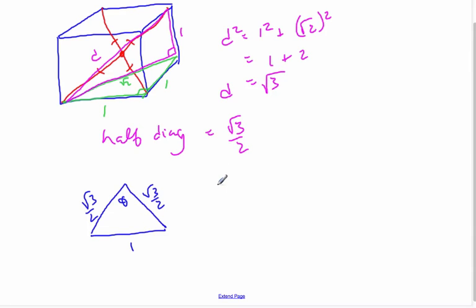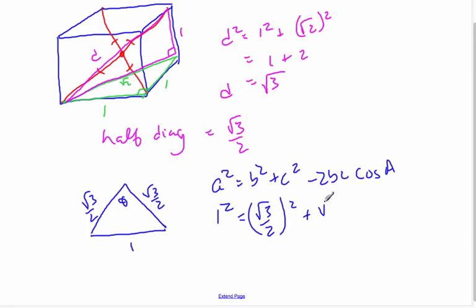Using my cosine rule, I can say a² is equal to b² plus c² minus 2bc cos A. This is 1 equals (√3/2)² plus (√3/2)² minus 2 times (√3/2) times (√3/2) cos θ.